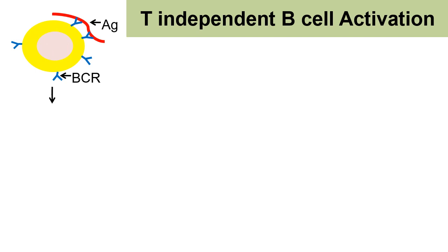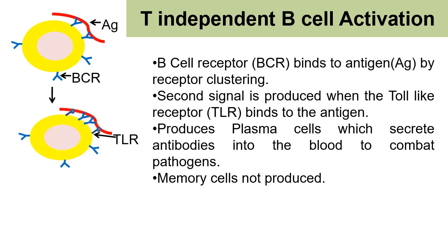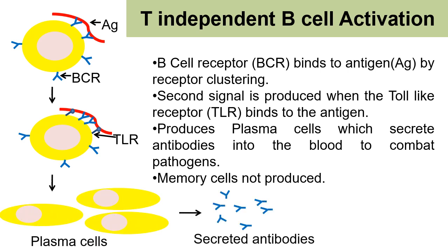In T-independent B cell activation, the first signal is produced when the B cell receptor binds to the antigen by receptor clustering. The second signal is produced when the Toll-like receptor binds to the antigen. After the B cell gets activated, it differentiates into plasma cells which secrete antibodies into the bloodstream to combat the pathogen. In this type of activation, no memory cells are produced.